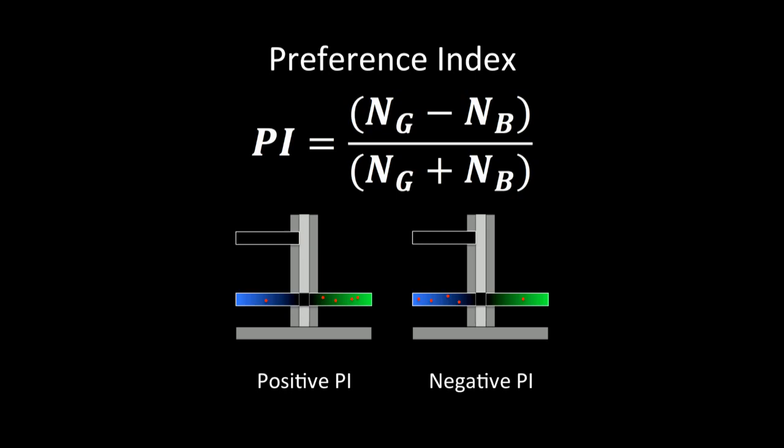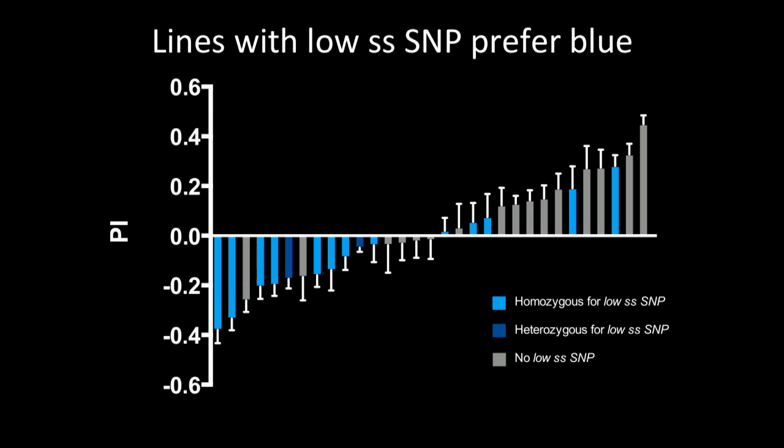This gives us something called the preference index, or PI, and essentially if the flies prefer green light, then we end up with a positive PI, and if the flies prefer blue light, we end up with a negative PI. And our hypothesis was that the low spineless SNP causes a low spineless on-off frequency, so we should expect to have more rhodopsin 5, and thus the flies should prefer blue light.